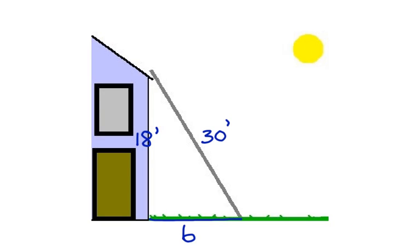Now, you can see that this is a right triangle. To solve this right triangle, we are going to use the Pythagorean theorem.